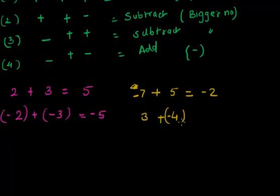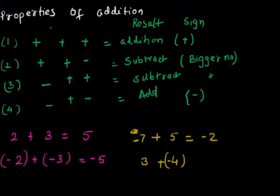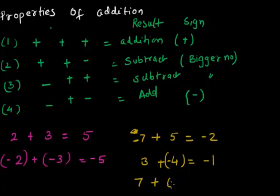Similarly, if I have 3 plus minus 4: one is positive, one is negative, so I subtract — 4 minus 3 is 1, and the bigger number is negative, so the answer is minus 1. If I have 7 plus minus 3: one positive, one negative, so 7 minus 3 is 4, and the bigger number 7 is positive, so the answer is positive 4.